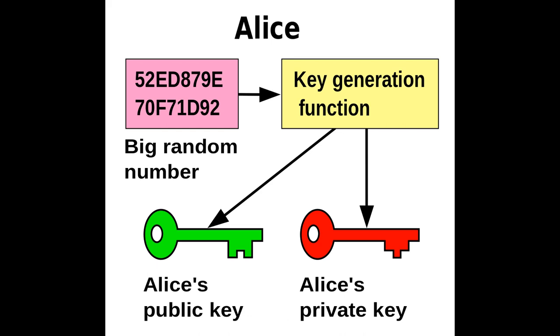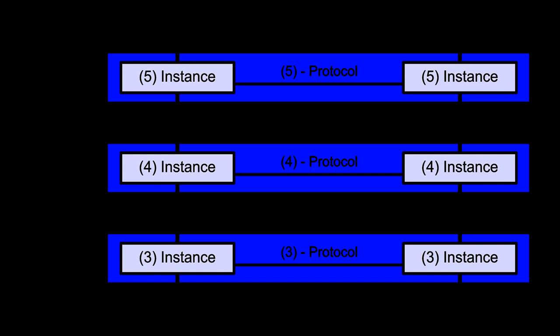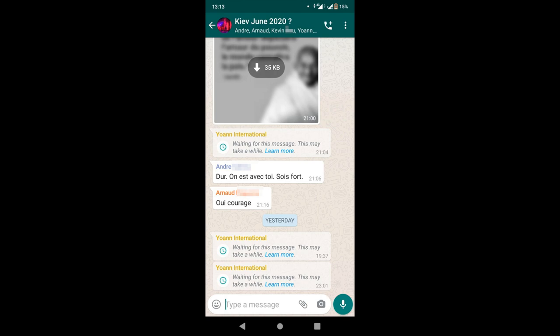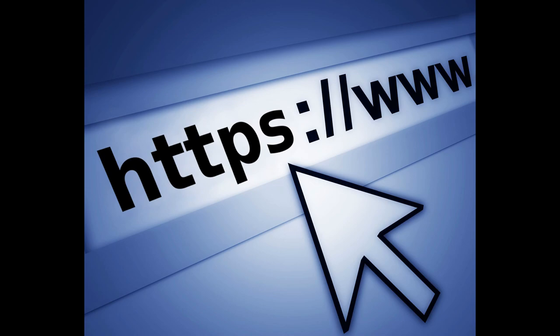Another potential security vulnerability in using asymmetric keys is the possibility of a man-in-the-middle attack, in which the communication of public keys is intercepted by a third party — the man-in-the-middle — and then modified to provide different public keys instead. Encrypted messages and responses must also be intercepted, decrypted, and re-encrypted by the attacker using the correct public keys for different communication segments, so as to avoid suspicion. A communication is said to be insecure where data is transmitted in a manner that allows for interception, also called sniffing. These terms refer to reading the sender's private data in its entirety.